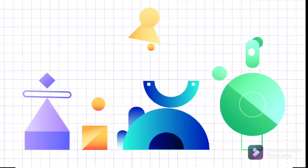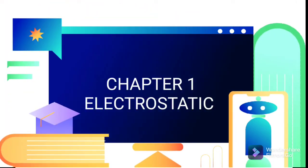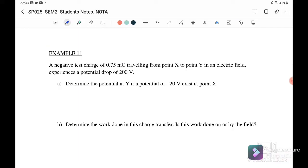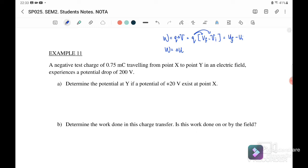Welcome back to my channel. Today we will continue discussing examples for Chapter 1.4: Work Done and Electric Potential Energy. In a previous video, we learned that work done is equal to the test charge times the change in potential, or q times (V_final minus V_initial). Substituting, q times V is actually potential energy, so work done equals the change in potential energy.